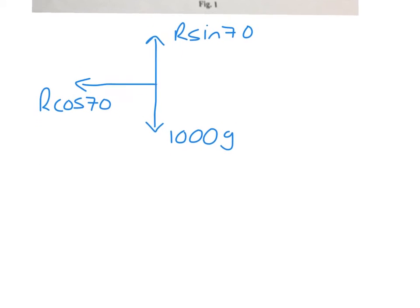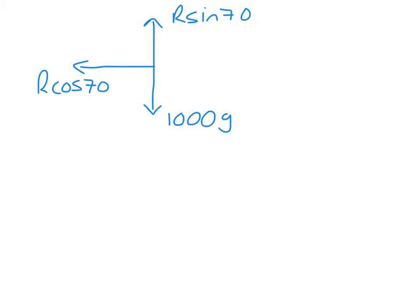If we now consider our direction, so I'm going to look at the vertical, and that tells me that R sin 70 has to equal 1000G. So I can work out that R